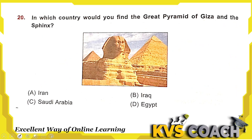Next: in which country would you find the Great Pyramid of Giza and the Sphinx? This is a picture from Egypt. Option D is the right answer.